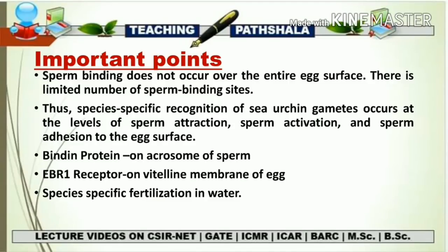Important points to remember about sea urchin fertilization: sperm binding does not occur over the entire egg surface — there is a limited number of sperm binding sites. Species-specific recognition of sea urchin gametes occurs at the levels of sperm attraction, sperm activation, and sperm adhesion to the egg surface. Bindin protein is present in the acrosome of the sperm, and the EBR1 receptor is on the vitelline membrane of the egg. Fertilization always takes place in water and is always species-specific.